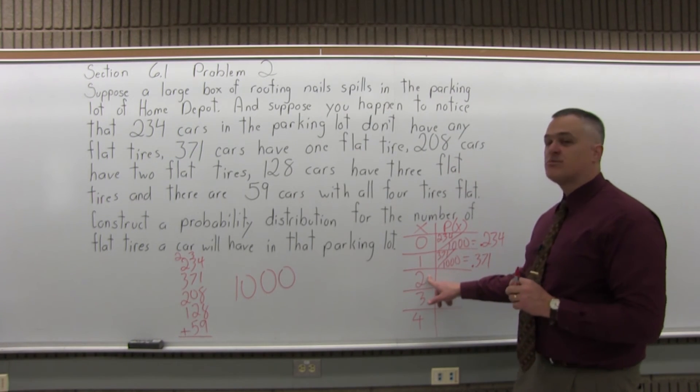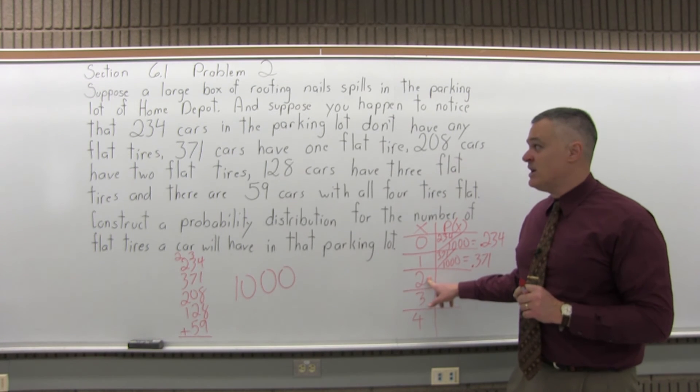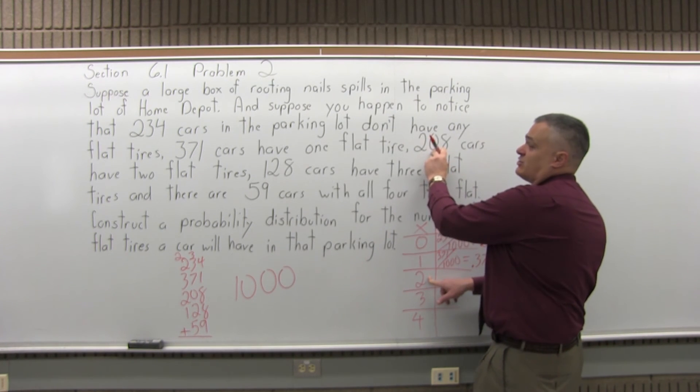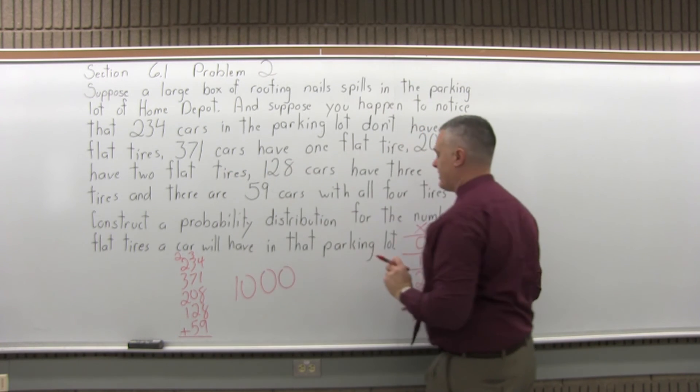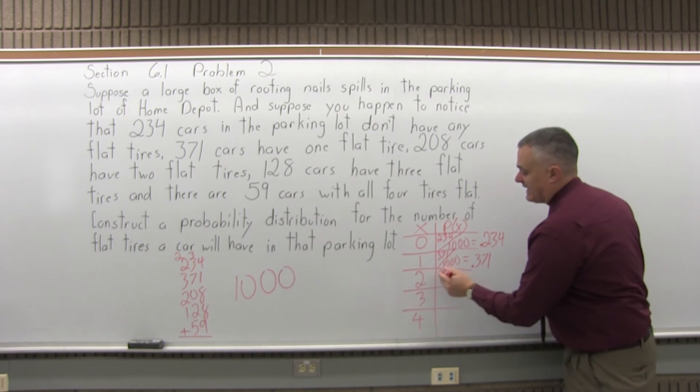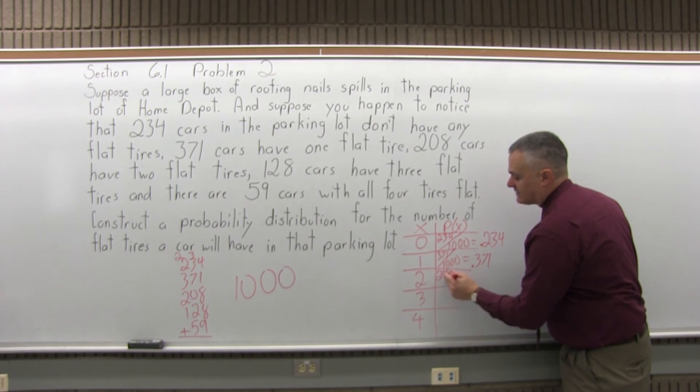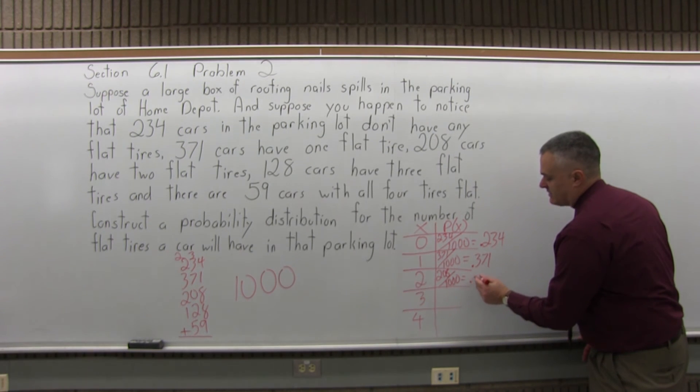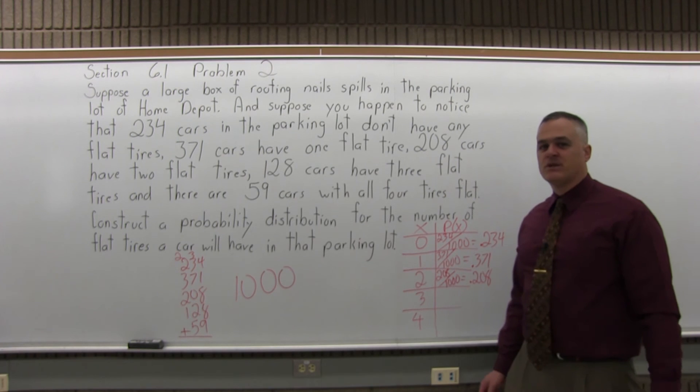Next, what's the probability that the car would have two flat tires? There's 208 cars that have two flat tires, so it would be 208 over 1,000 because there's 1,000 cars in the parking lot altogether, which you could leave as a fraction, but if you prefer decimals, it becomes 0.208 or slightly less than a 21% probability.